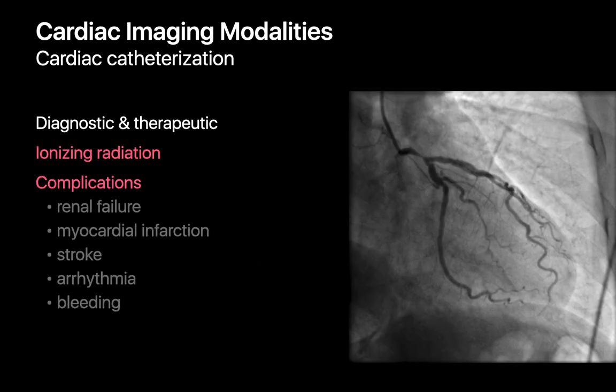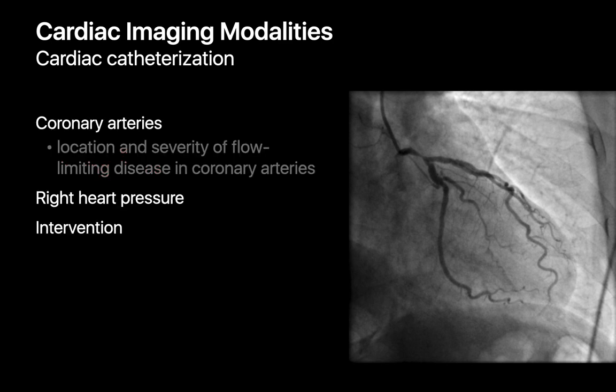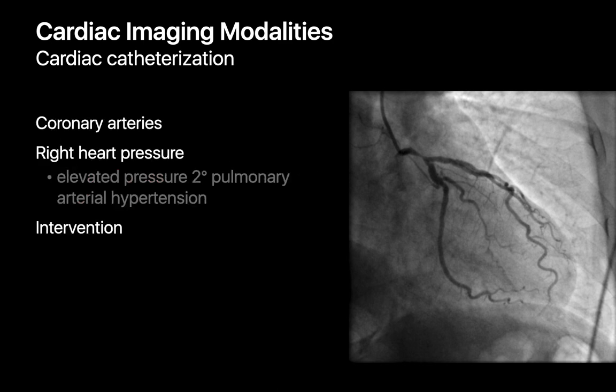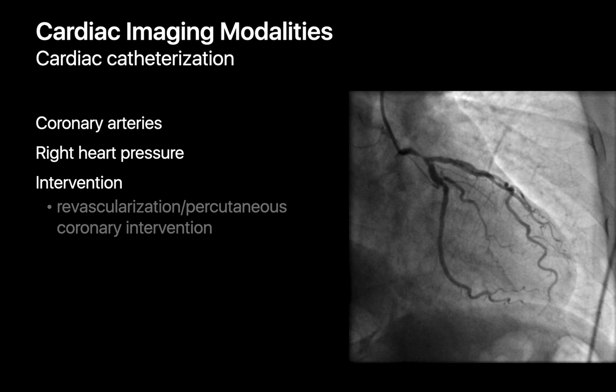Cardiac catheterization has been around for many decades and is the only modality that affords us the ability to both diagnose and treat. It comes with the downsides associated with fluoroscopy — namely radiation exposure — the downsides associated with iodinated contrast use, renal failure if contrast nephropathy occurs, and the downsides associated with getting a catheter to the coronary artery, namely MI, stroke, arrhythmia, and bleeding. With cardiac catheterization, we can assess the patency of the coronary arteries, measure right-sided heart pressures, and very importantly, we can sometimes directly intervene on problems revealed in the coronary arteries.